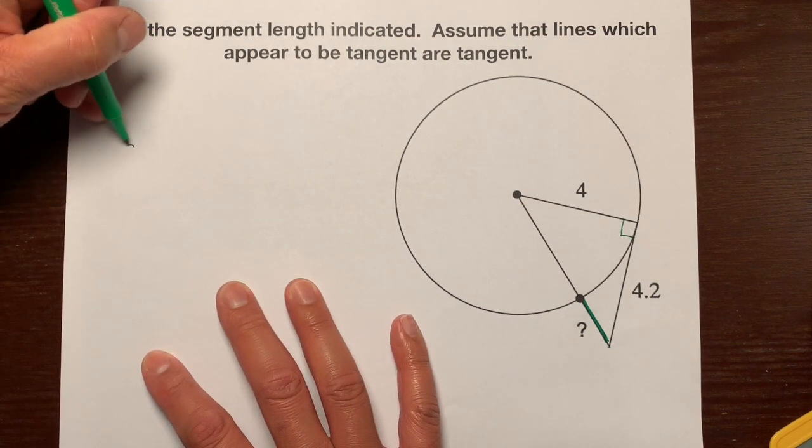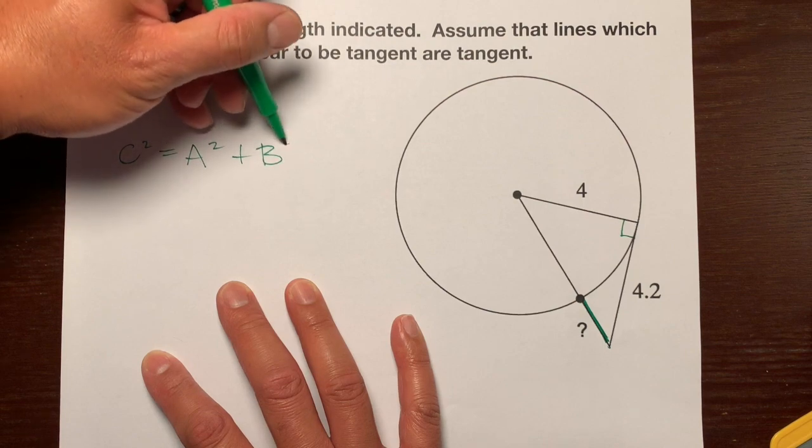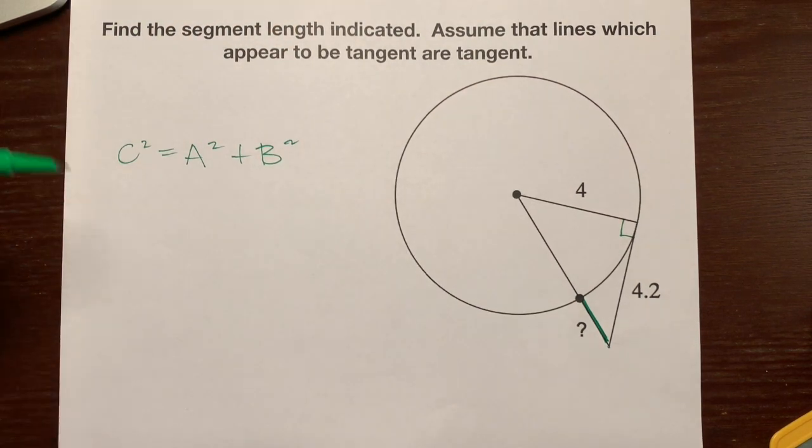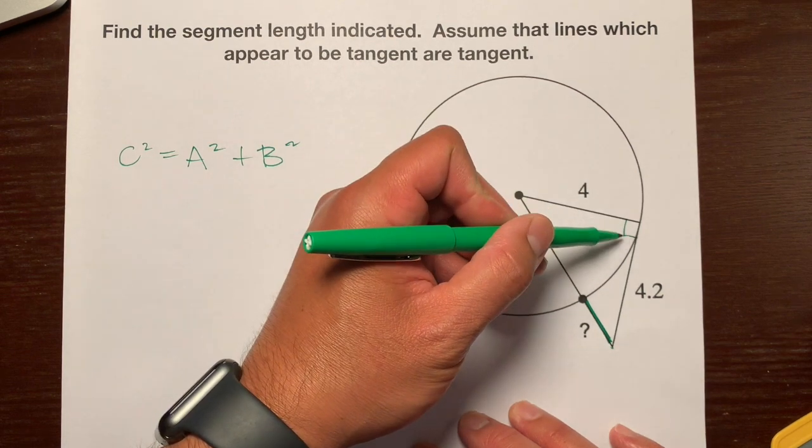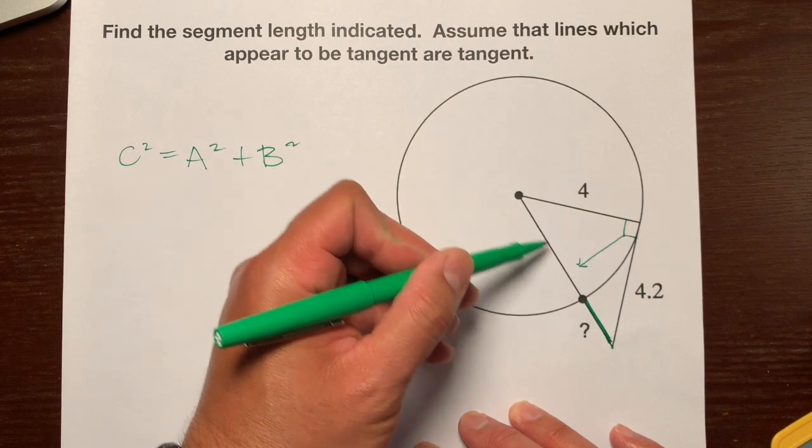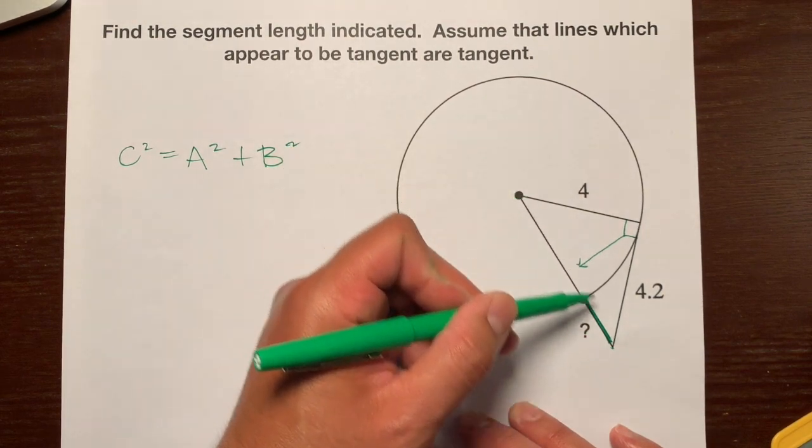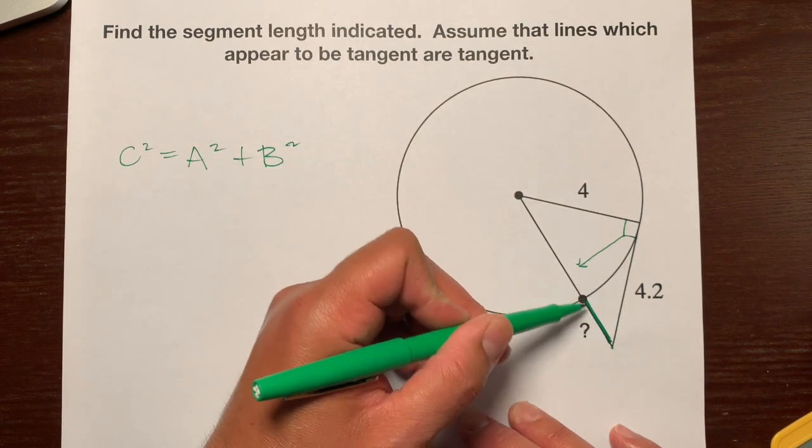Remember, the Pythagorean theorem is c squared is equal to a squared plus b squared. And the c is the hypotenuse. The hypotenuse is the side that is opposite the right angle. Here's the right angle. And it's looking at the hypotenuse right there. So this entire side right here is a hypotenuse. We're trying to just find this.